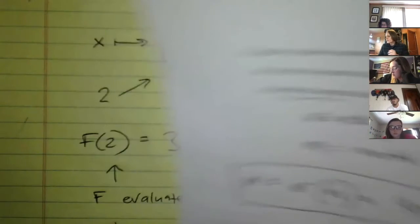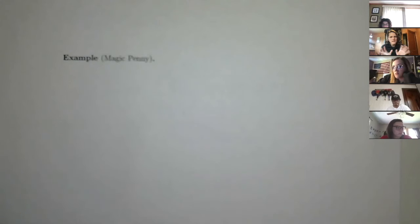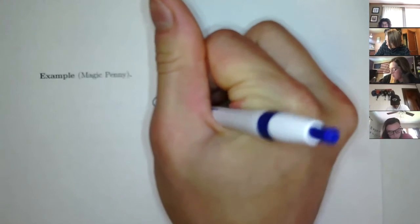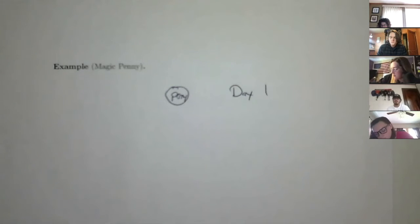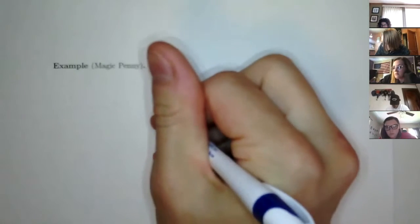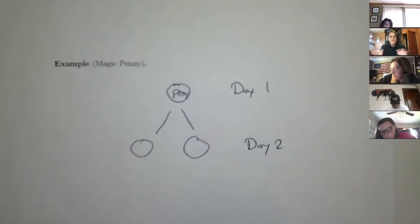Let's look at one more example called the magic penny. So here's the situation: you have one penny, and it's a magic penny. The first day you have one of them. You put it in your pocket, and the next day there are two — the penny split and made two pennies. Every day, each of the pennies splits and you get two more.